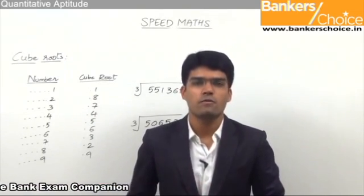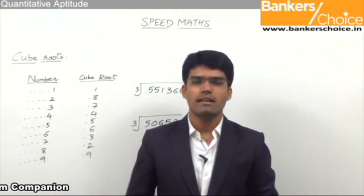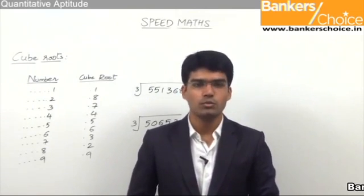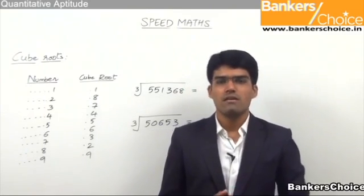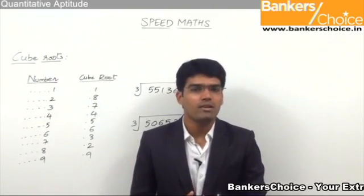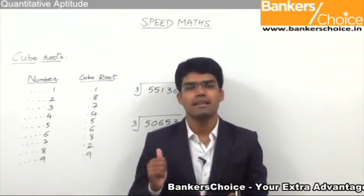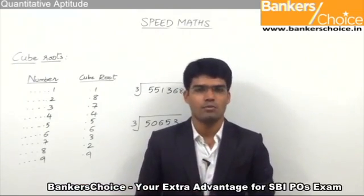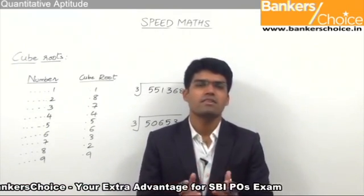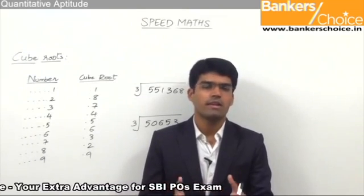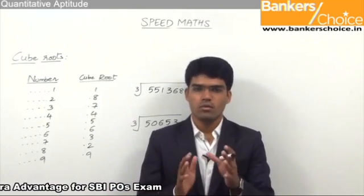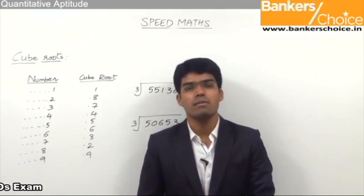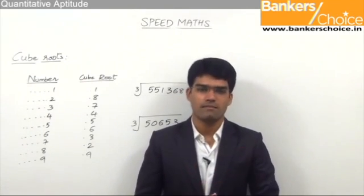Before we understand how to find cube roots in two steps, let me make it clear: this method is applicable only for perfect cubes, just as the square root method applies only for perfect squares. Generally, in the simplifications part of bank exams, we get only perfect cubes. If the question on cube roots is asked in approximations, the number may or may not be a perfect cube, but otherwise it is a perfect cube.